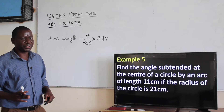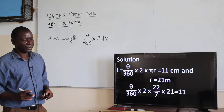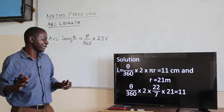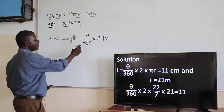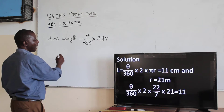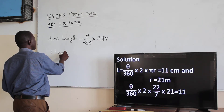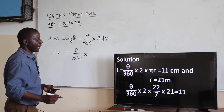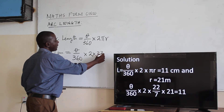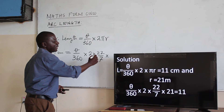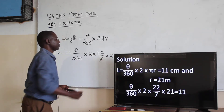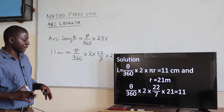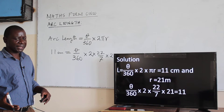Again, from there, we substitute using the same formula. The angle is what will give us the fraction of the circle. We substitute: 11 centimeters equals the unknown angle divided by 360, multiplied by 2 pi — where pi is 22 over 7 — multiplied by the radius of 21. We manipulate those figures, cross-multiply, and divide to get the angle.